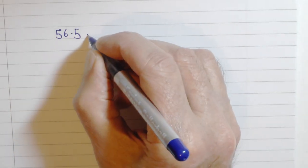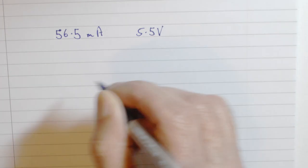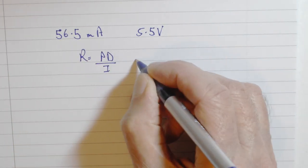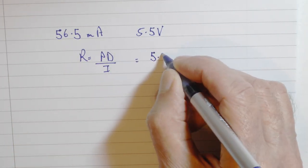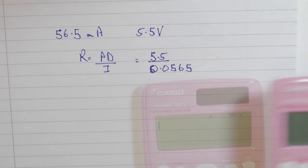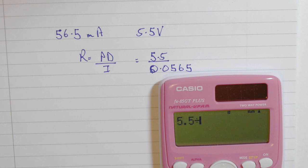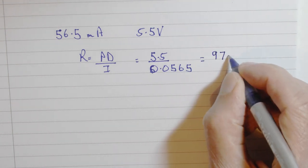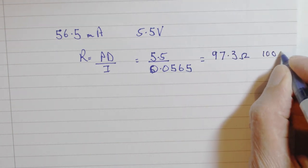Working this through quickly, we've got 56.5 milliamps, 5.5 volts. That's 5.5 therefore divided by 0.0565. Calculating that through then, 5.5 divided by 0.0565 to three significant figures, that's 97.3 ohms.